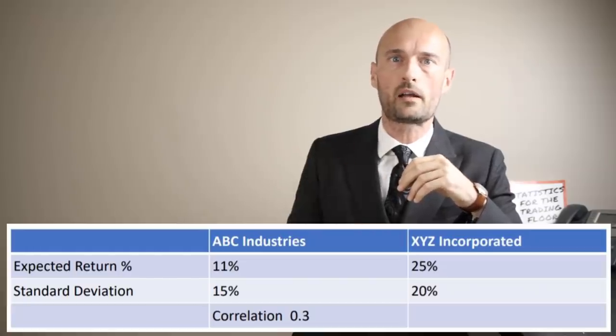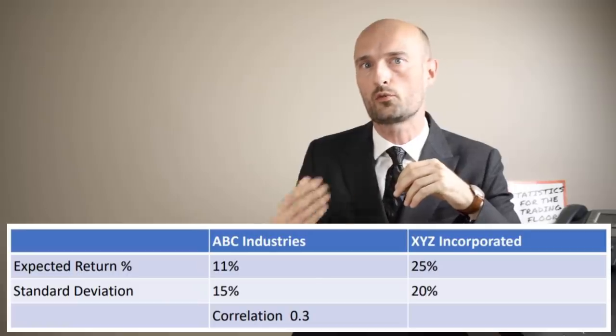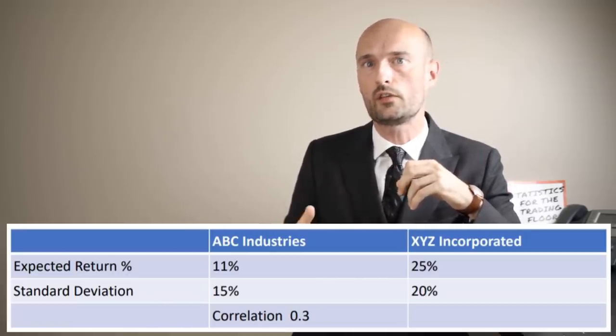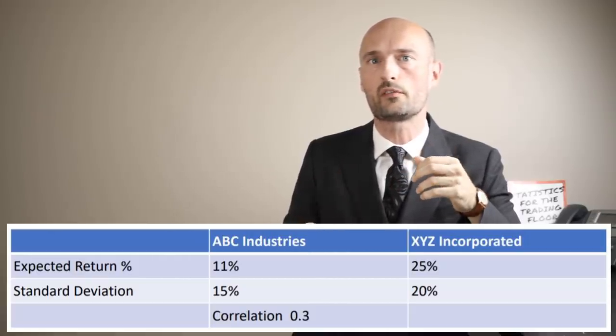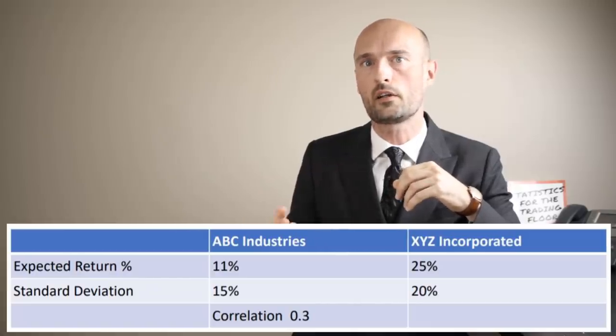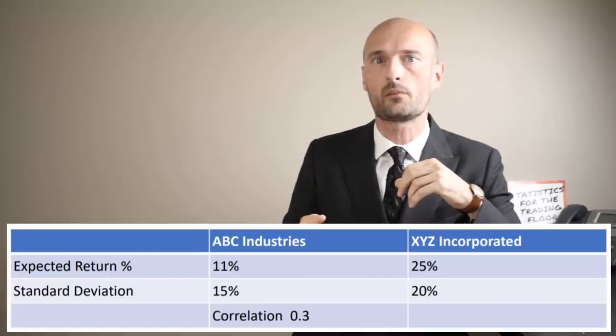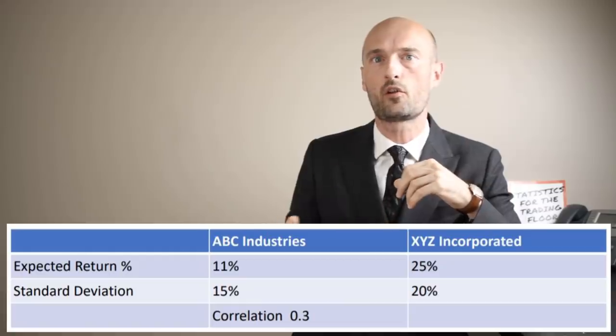In order to understand how these three statistics work together for investors, let's take a quick look at an example of a two stock portfolio. It's a very simplified approach. We're going to have two stocks ABC and XYZ in the example. ABC has an expected return of 11% and XYZ has an expected return of 25%. ABC has a standard deviation of 15% and XYZ has a standard deviation of 20%. As you can see, XYZ is riskier with a higher standard deviation, and it also has a higher expected return. The correlation between these two assets is 0.3. This is a positive correlation, so it means that in general they might move up and down together at the same time, but it's a very weak correlation, meaning that there is an awful lot of randomness in this relationship.